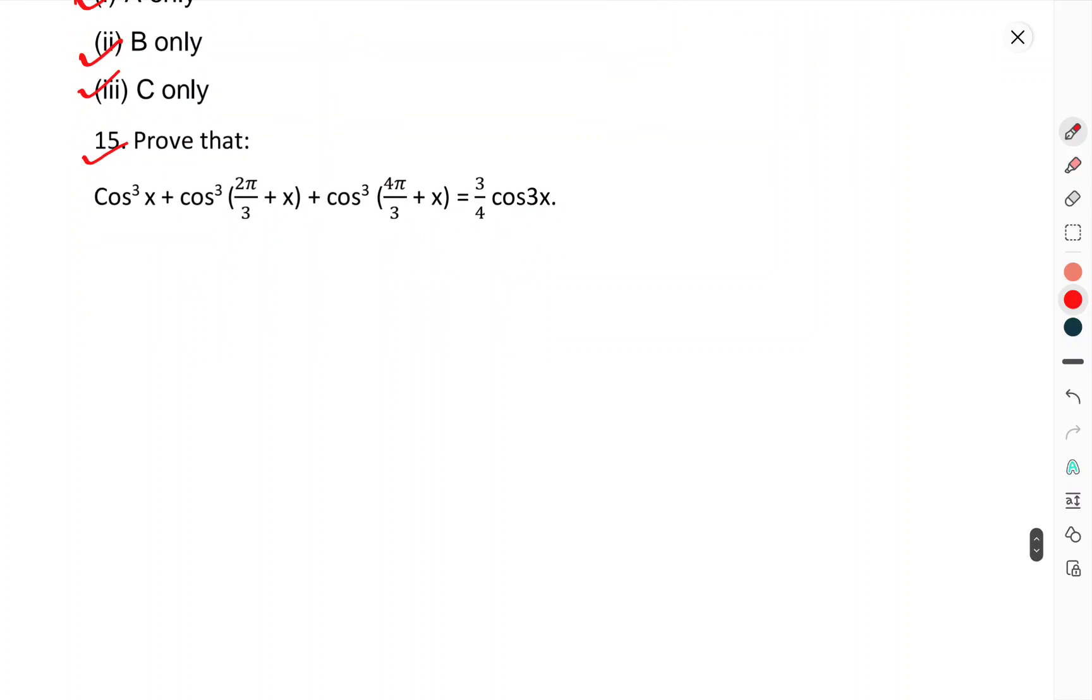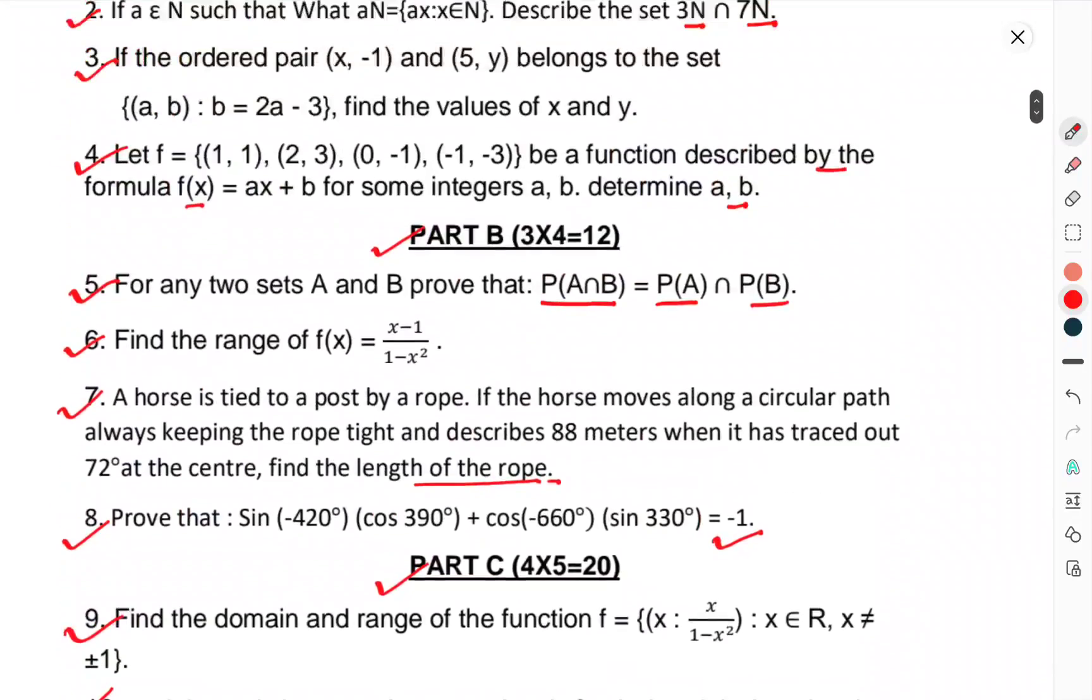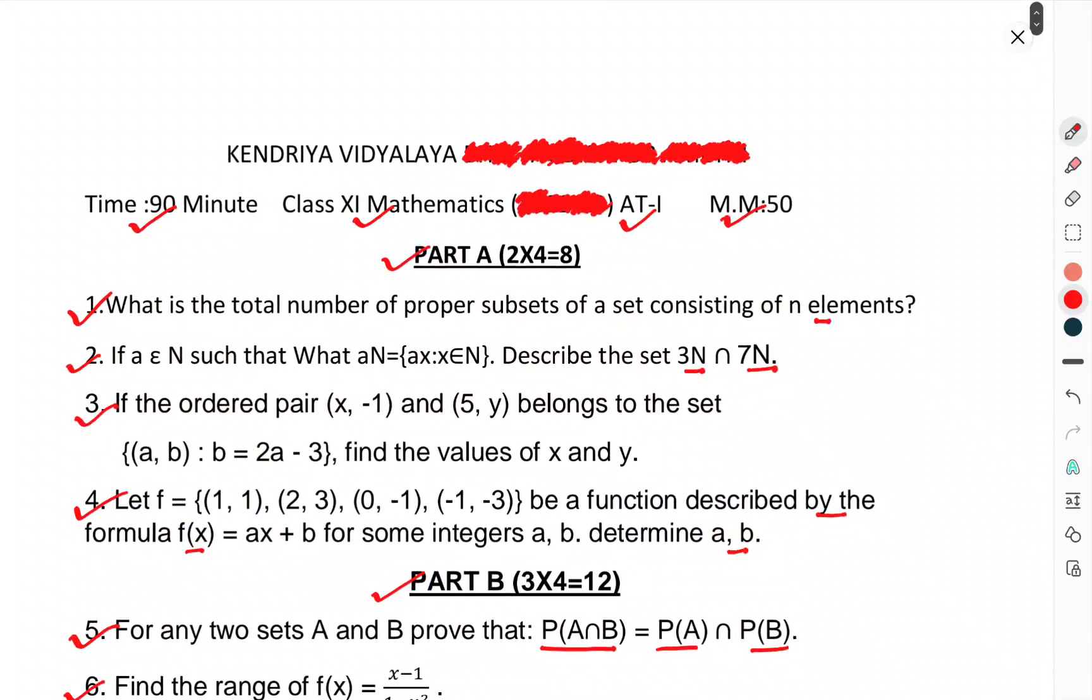Question 15: Prove that cos³x + cos³(2π/3 + x) + cos³(4π/3 + x) = (3/4)cos 3x. This was the question paper of Mathematics Assessment Test 1, Class 11. That's enough for this one. Thank you.